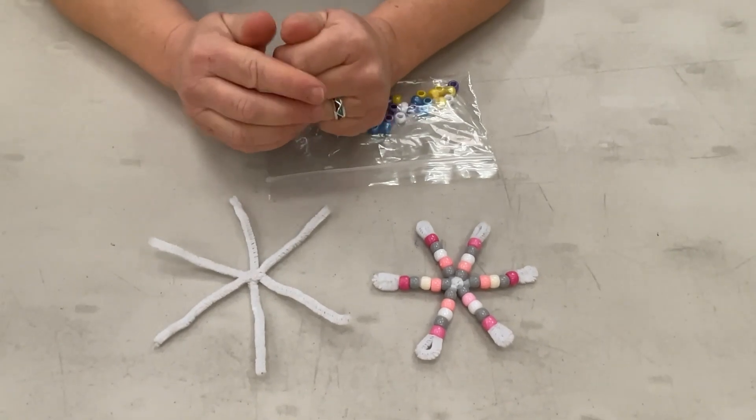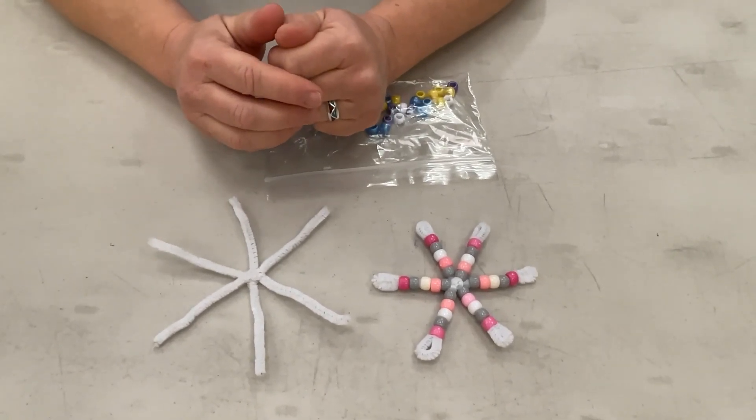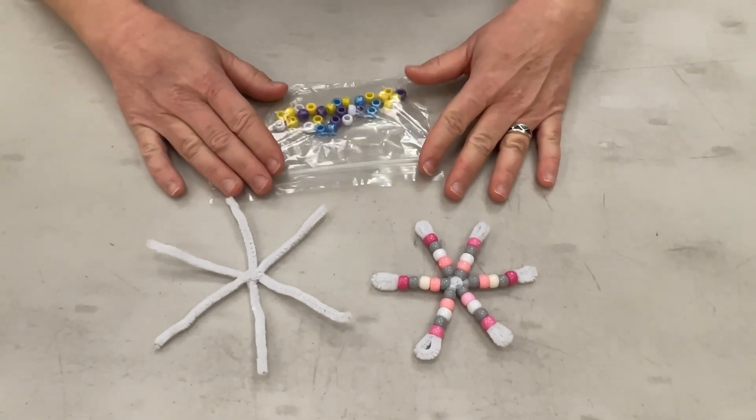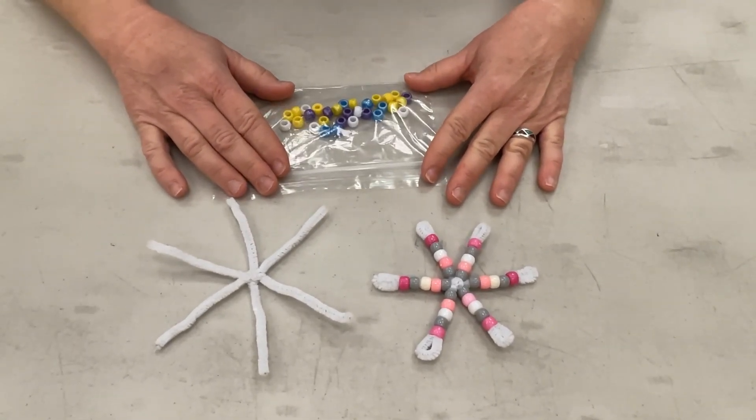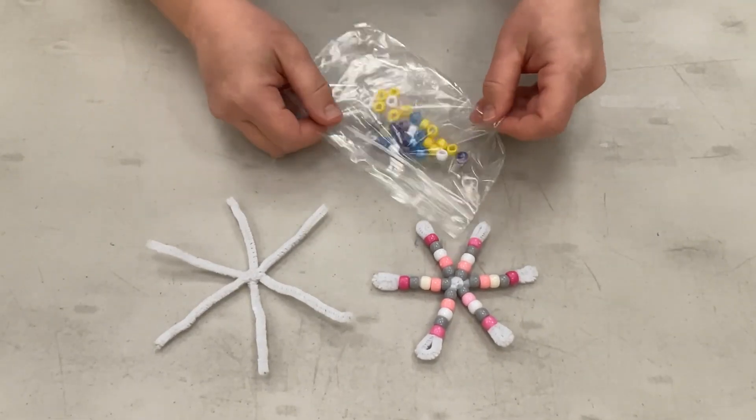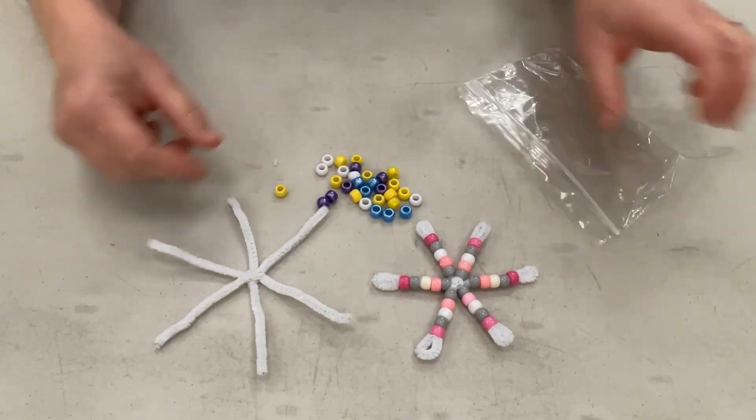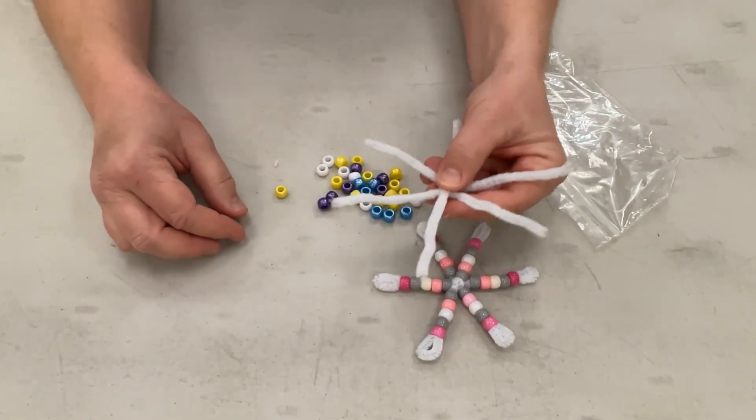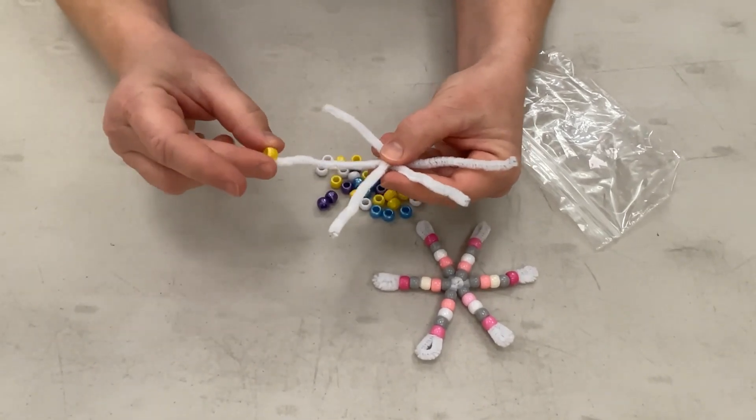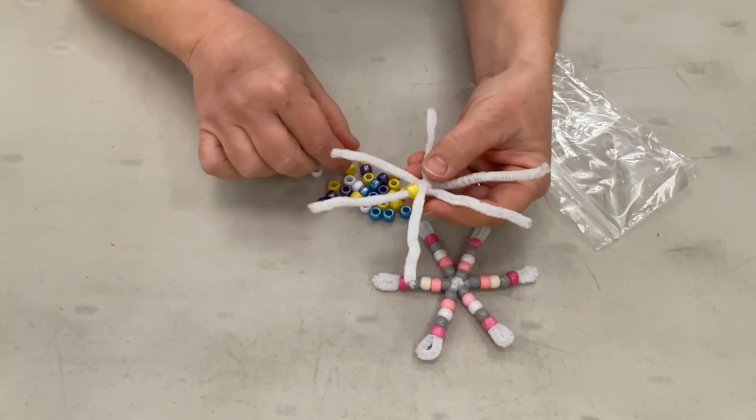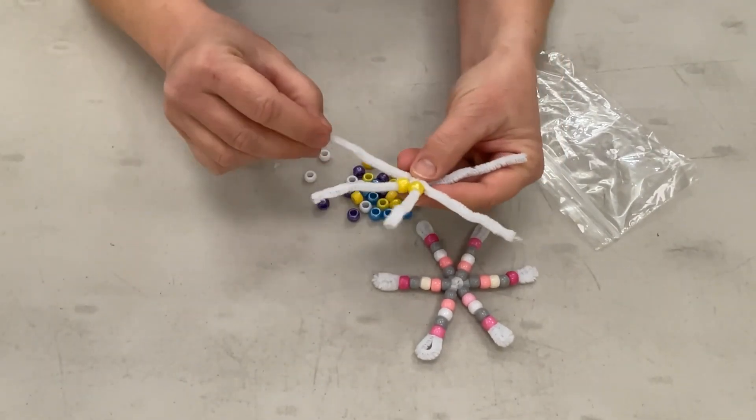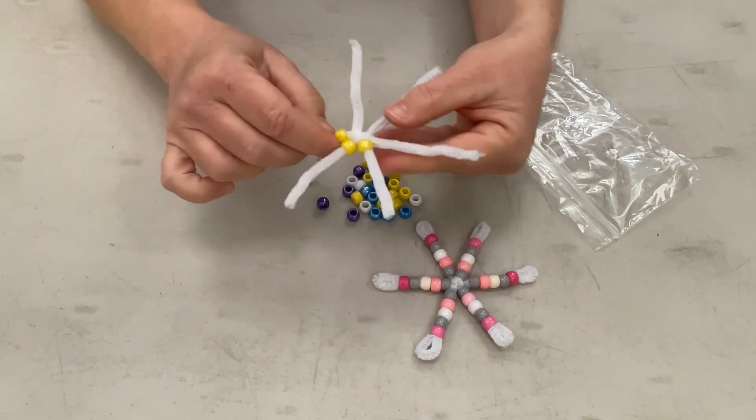Once we've twisted our pipe cleaners together, it's time to add the pony beads. You can use a variety of colors and just add the beads at will, or you can make a pattern or a design. I've chosen some different colors and we'll put my beads on my snowflake now. So each arm, you're going to add a bead and push it to the center. Just like so.